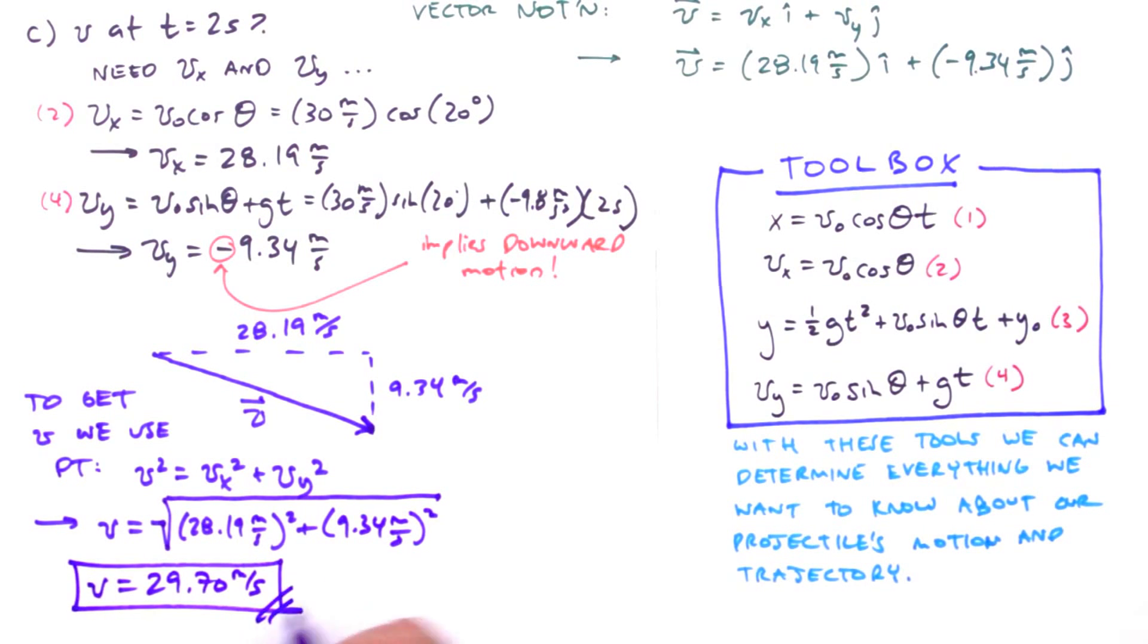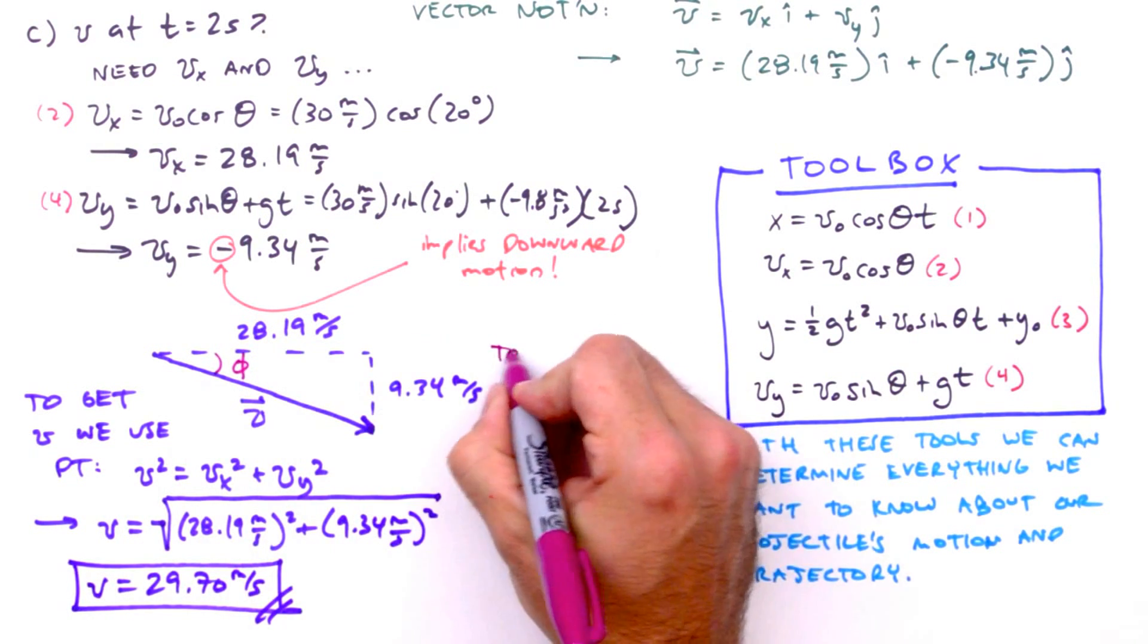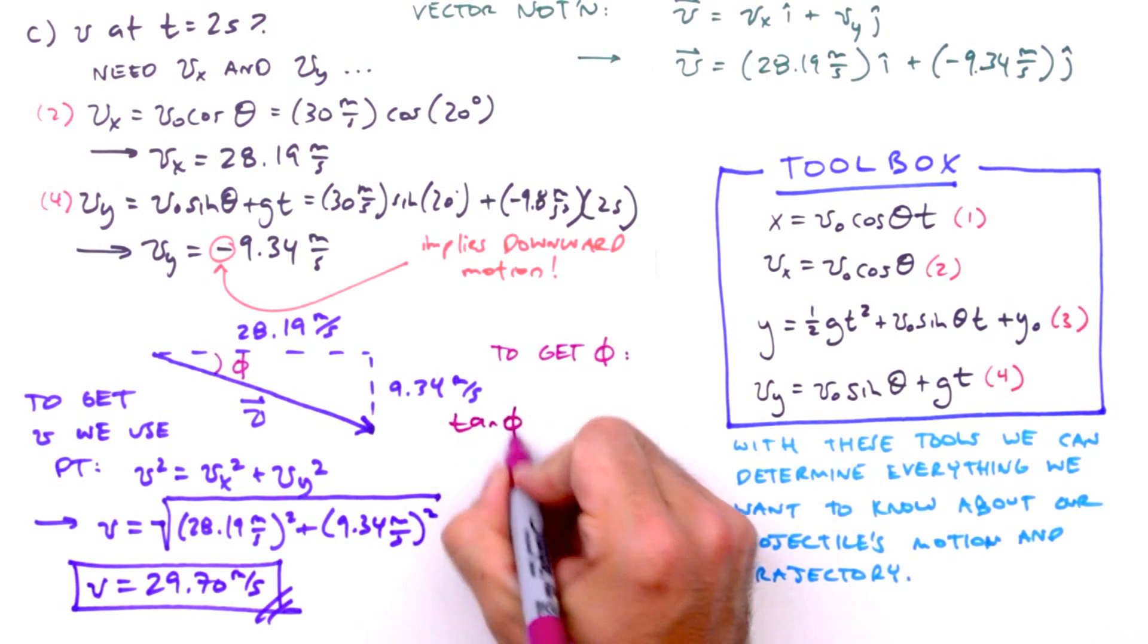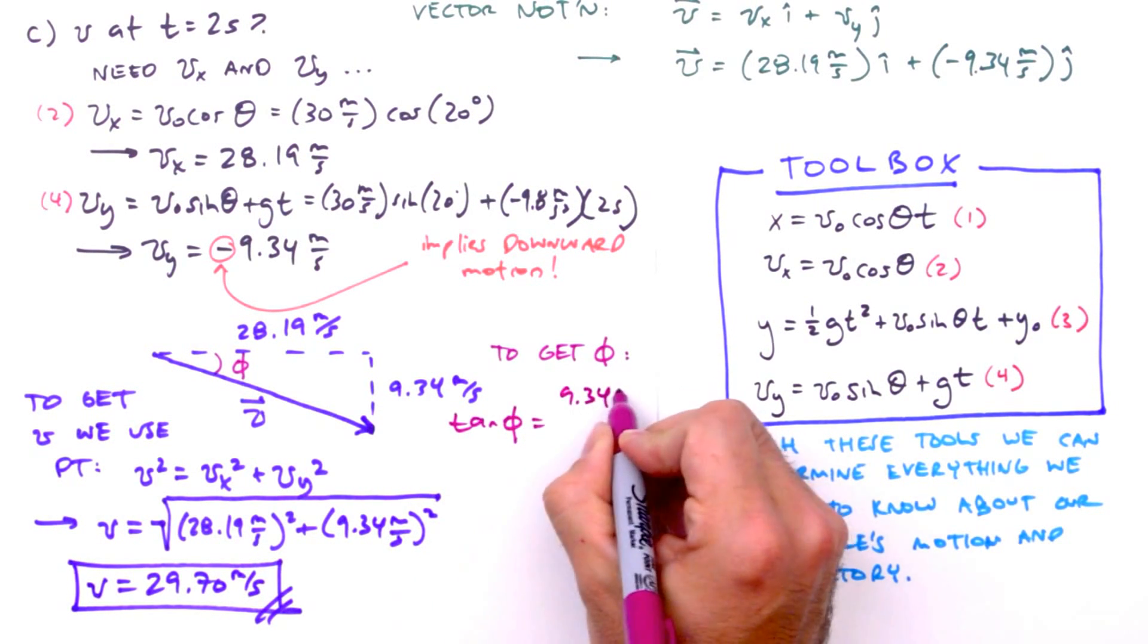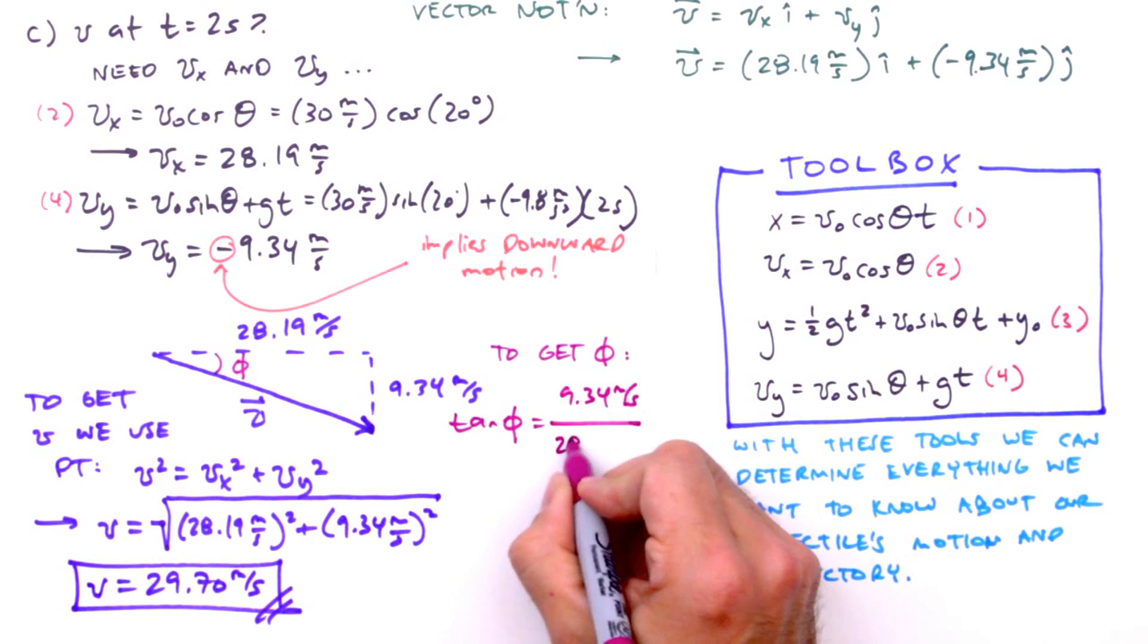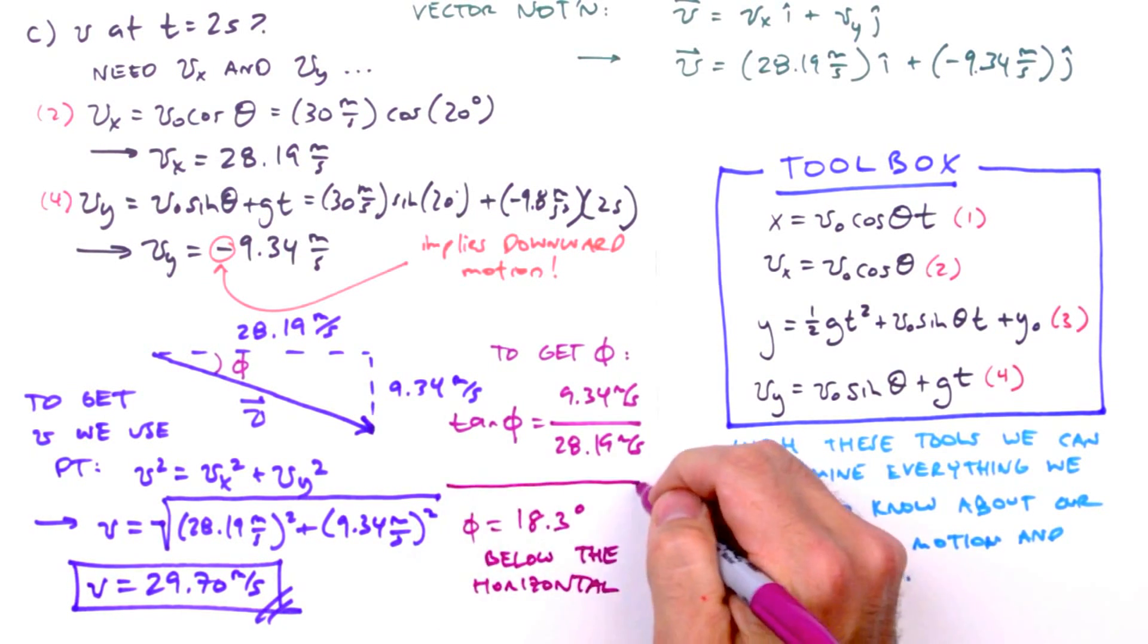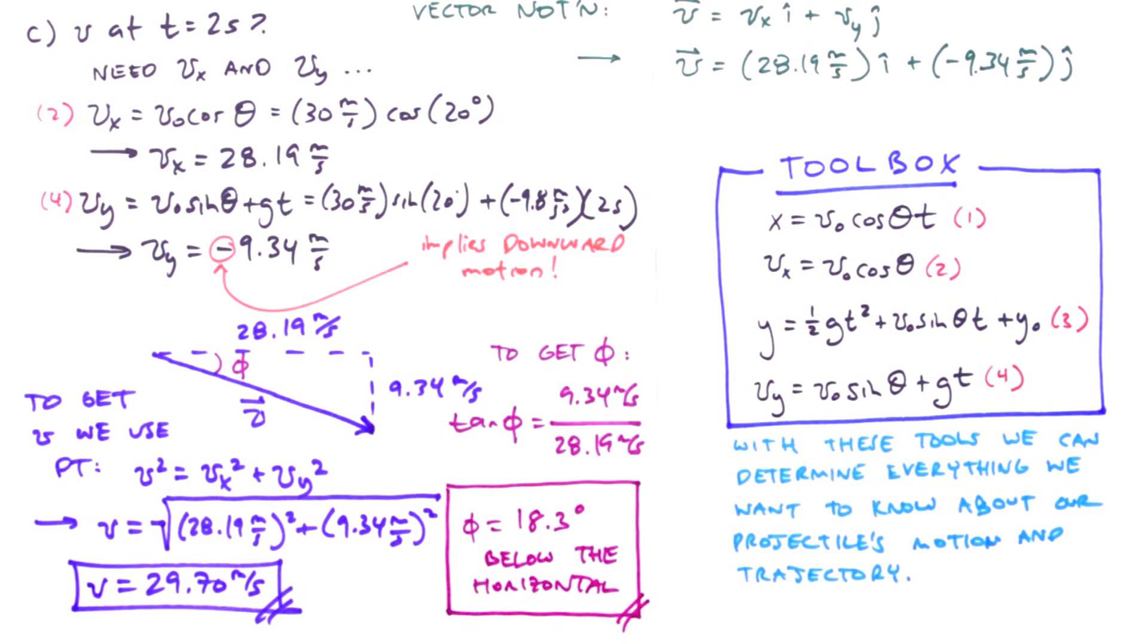Physically reasonable? Check. Are we done? Not yet, we still need the direction of its motion, that is to say the angle between the velocity vector and the horizontal. To get phi, we use trigonometry. So the tangent of phi equals opposite 9.34 meters per second over adjacent 28.19 meters per second. Take an inverse tangent, and we get a value of 18.3 degrees. So two seconds after launch, our projectile is moving at 29.70 meters per second at 18.3 degrees.